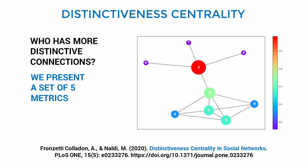We present distinctiveness centrality as an add-on to all these well-known metrics, and we use it to try to answer the question: who has the most distinctive connections? To do so, we designed a set of five metrics.